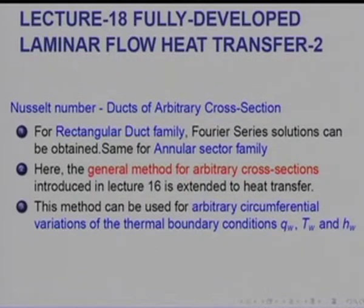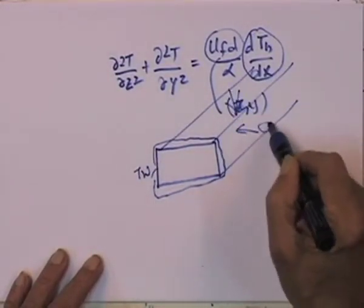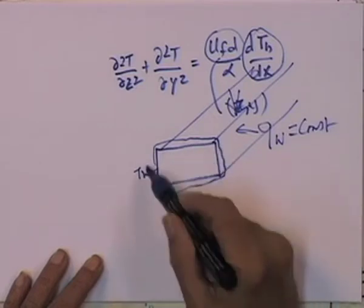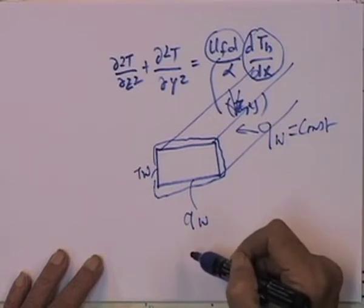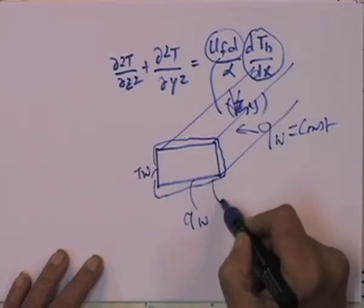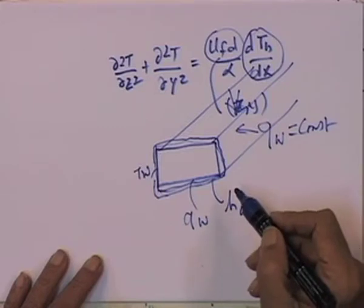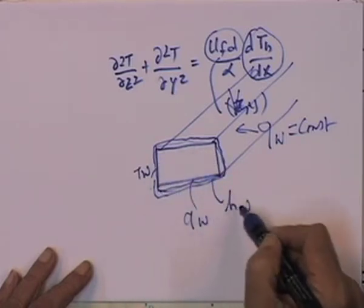For example, if I have a rectangular duct, T_w may vary over the periphery. Although the heat flux q_w is constant in the axial direction, circumferentially T_wall may vary, or even q_wall may vary. When we have a convective boundary condition, even the heat transfer coefficient h_w on the outside of the duct can vary. So we have three possibilities: T_w varying, q_w varying, or h_w varying.